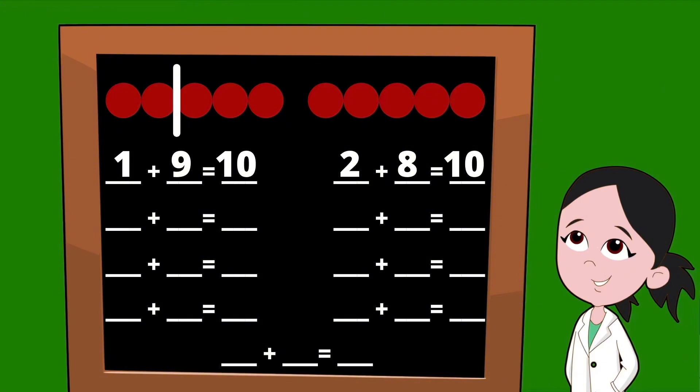Let's go ahead and slide our line over to the right once more. Now, to the left of our line, how many dots do you see? Yep, there are three dots to the left of our line, so our first partner is the number three. To the right of our line, we have seven dots, so our next partner is the number seven. Three plus seven equals 10.